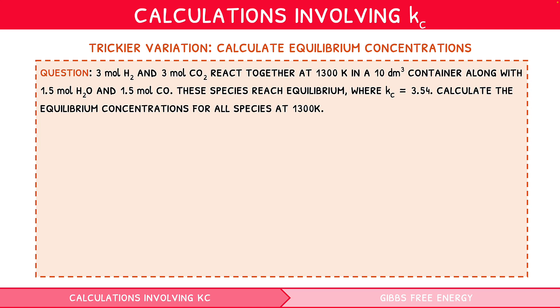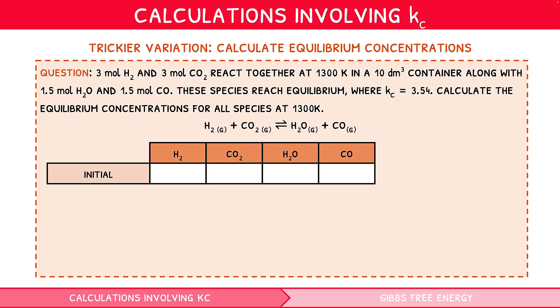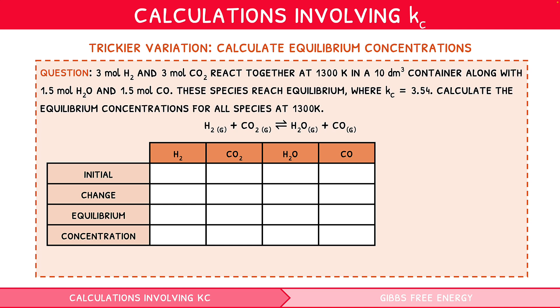Again, start by writing a balanced equation and write initial, change, equilibrium and concentration down the left-hand side. Now, fill in the initial molar quantities provided: 3, 3, 1.5 and 1.5. Since we are not provided with an equilibrium molar quantity, we cannot calculate the change experienced, so we represent this using X. We can therefore express the change experienced for each species by multiplying X by their coefficients, just like the previous question format. So, H2 and CO2 would experience a change of minus X, whilst H2O and CO would experience a change of plus X.